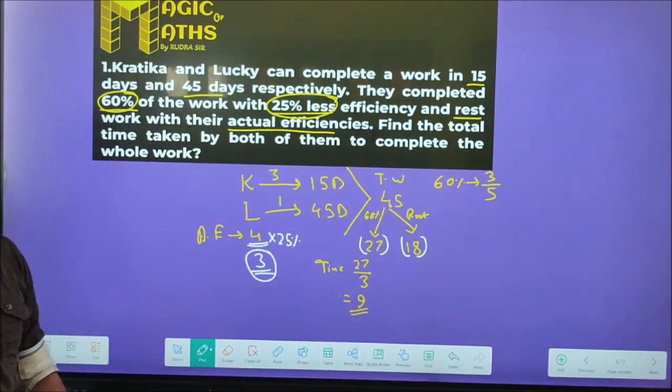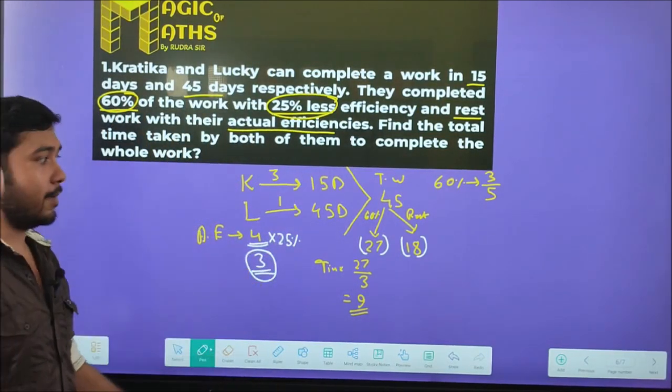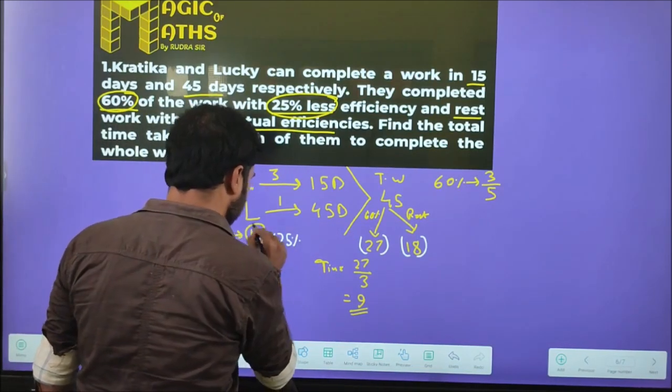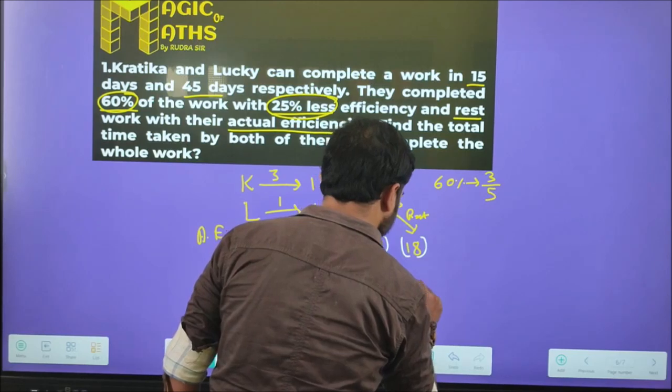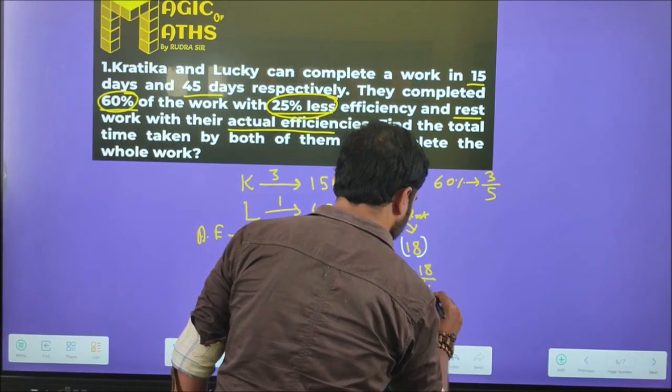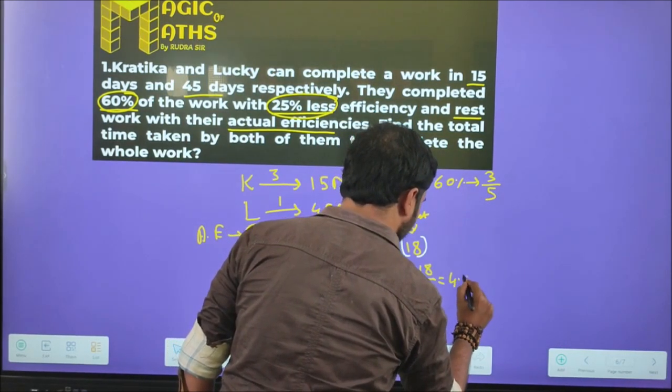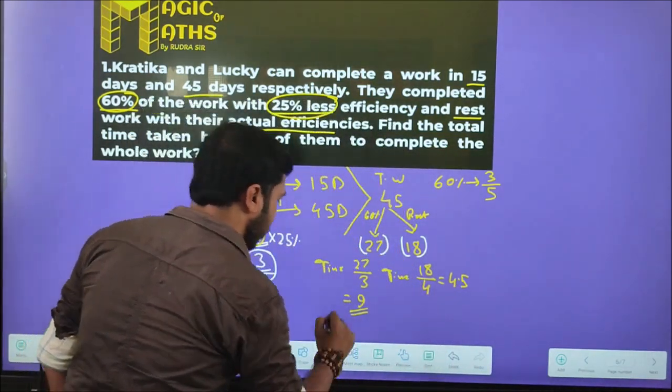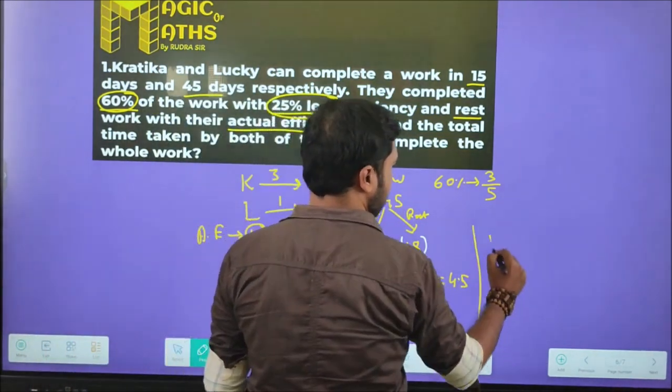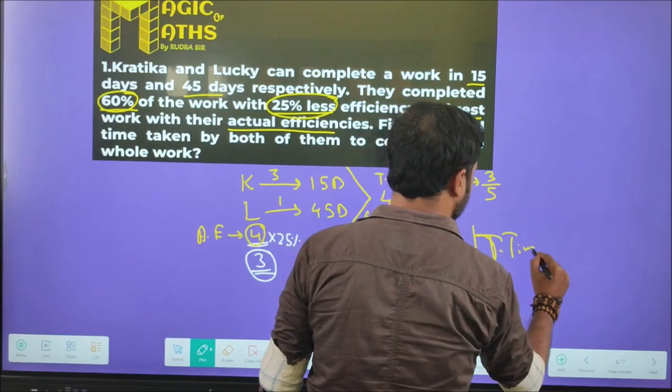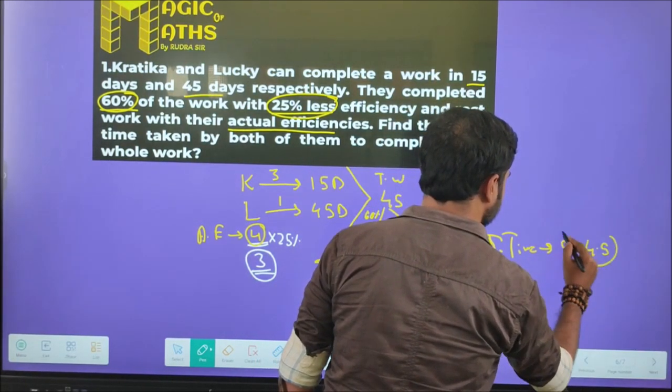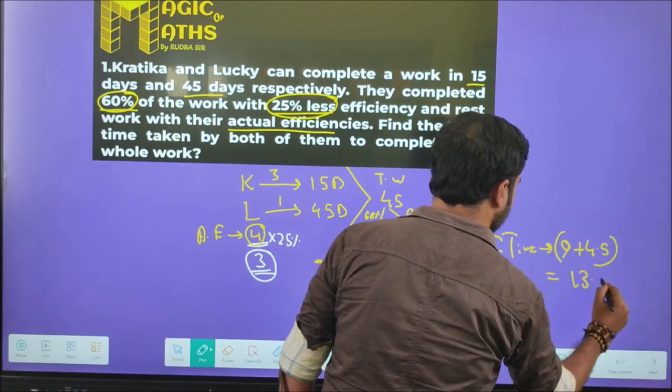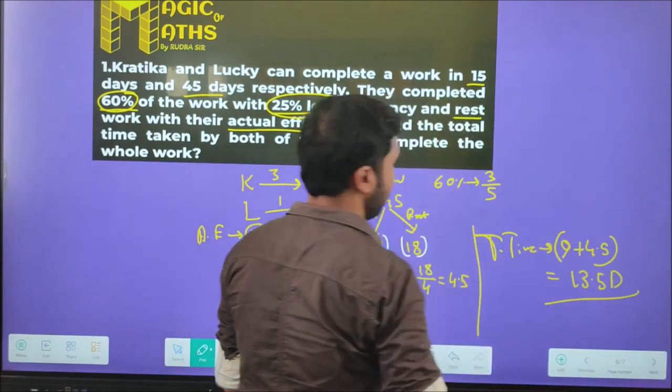9 days for 60% work, and the rest of the time with original efficiency which is 4, rest work is 18 divided by 4 equals 4.5. So total time is 9 days plus 4.5 days equals 13.5 days. This is the final answer.